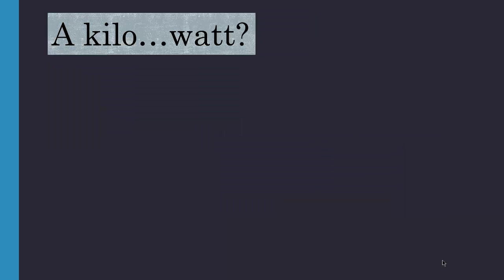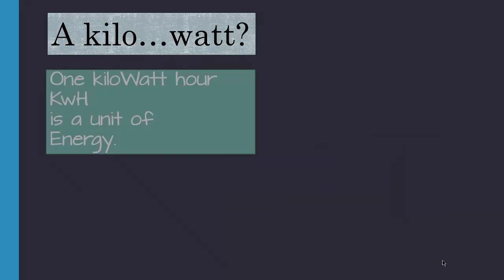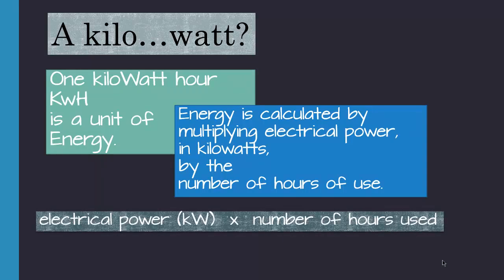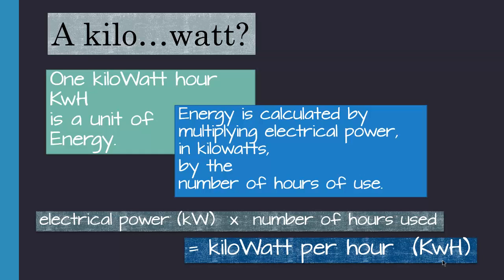A kilowatt? One kilowatt hour or kWh is a unit of energy. Energy is calculated by multiplying the electrical power in kilowatts by the number of hours used. So electrical power times the number of hours used. That gives us a kilowatt per hour, or kWh.